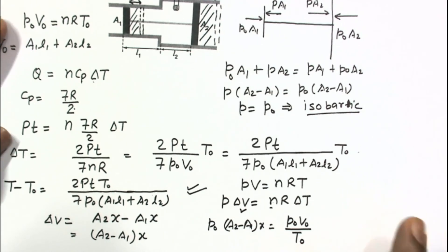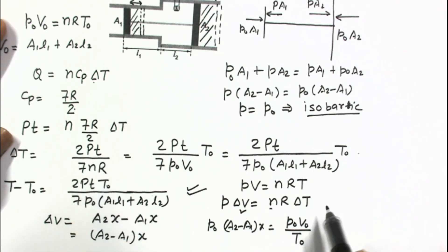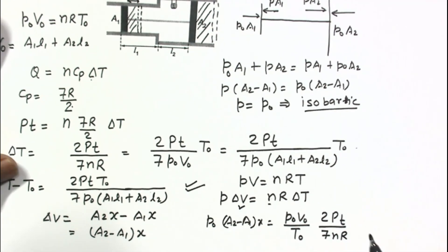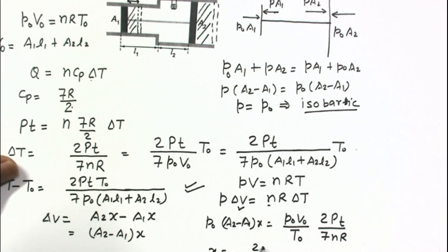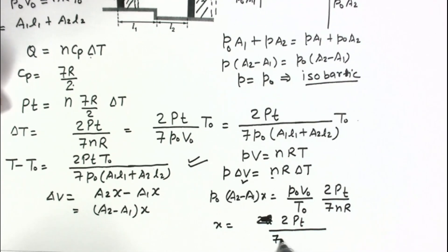Substituting ΔT equals 2Pt/(7NR) and NR equals P0·V0/T0, we can solve for x. Finally, x equals 2Pt divided by 7·P0·(A2 − A1).